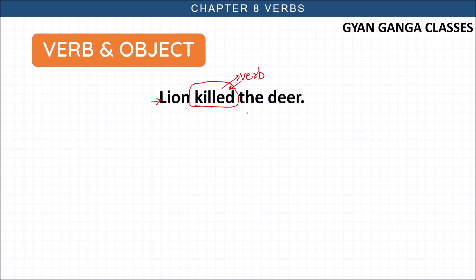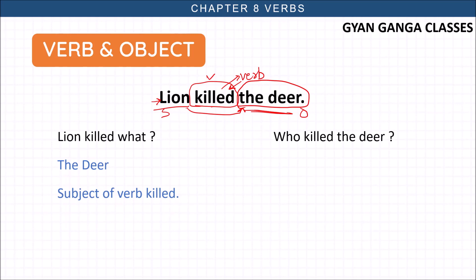Lion killed the deer. The object here is the deer and the subject is lion. Object is deer, killed is the verb. How can you identify what is the subject and object in any sentence? Ask: Lion killed what? The deer. This is the object. Who killed the deer? Lion. This is the subject.